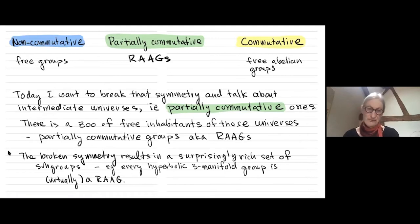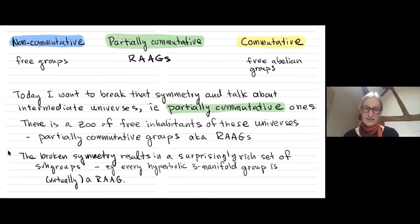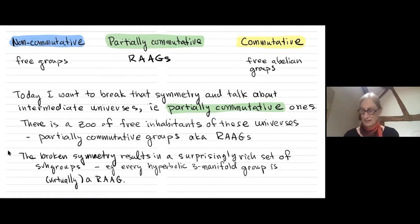These groups have come into focus recently because every hyperbolic 3-manifold group has a finite index subgroup which is a subgroup of a right-angled Artin group. This was part of spectacular work of Agol and Wise that helped settle the last of Thurston's conjectures on the structure of 3-manifolds. So these groups are very trendy in group theory and low-dimensional topology.